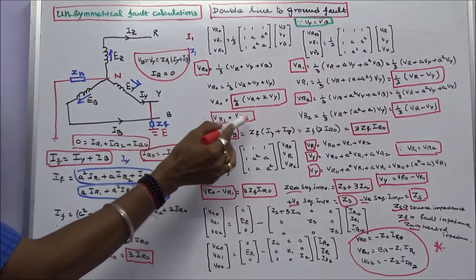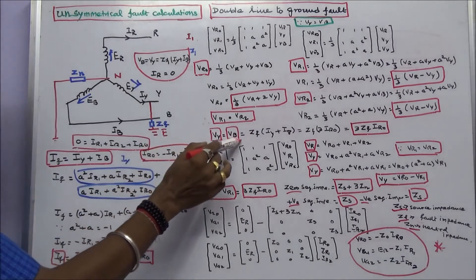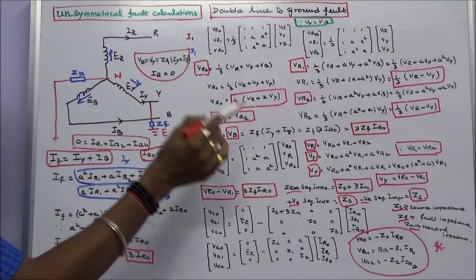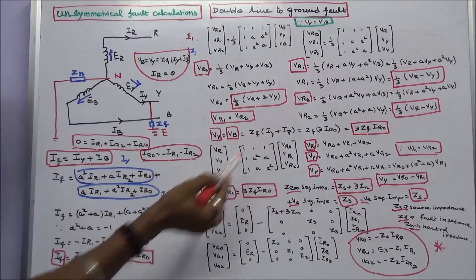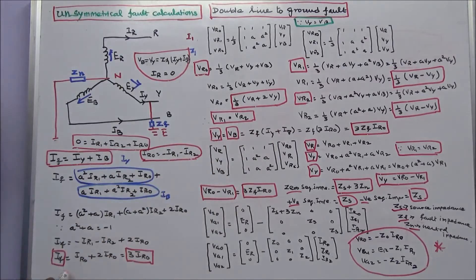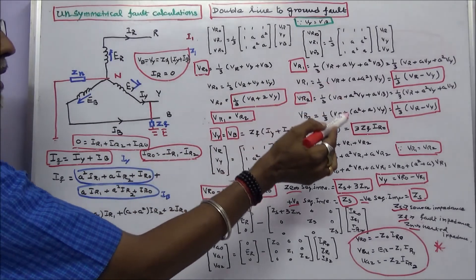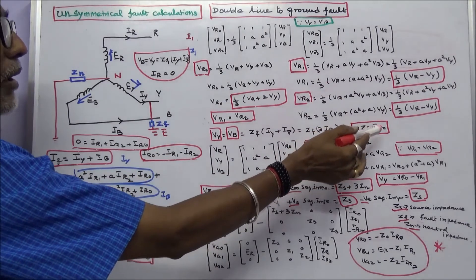Therefore VR1 equals VR2. VY equals VB equals Zf into fault current (IY plus IB), which equals 3 times IR0. Therefore VY equals 3 into Zf into IR0.